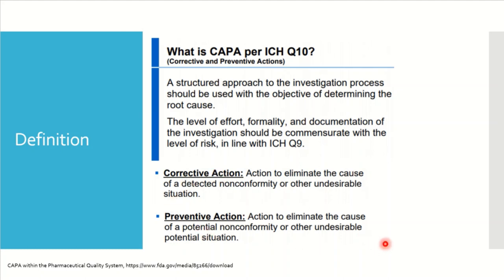If we split corrective actions further, we get a couple of terms. Corrections, or remedial actions, focus on immediate situations and eliminate the existing non-conformance — that is corrections. Corrective actions are a reaction to a non-conformance or undesirable situation that has already happened. Preventive actions are the approach and process of detecting non-conformances or undesirable situations that have not yet happened — we want to prevent their occurrence in future and identify all potential areas where we should act.